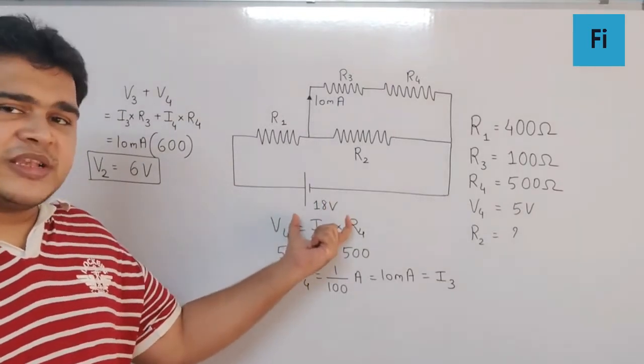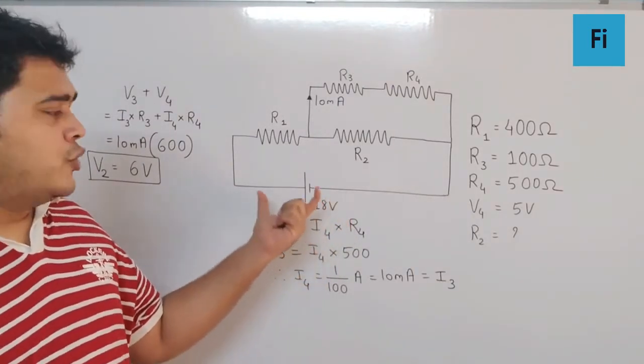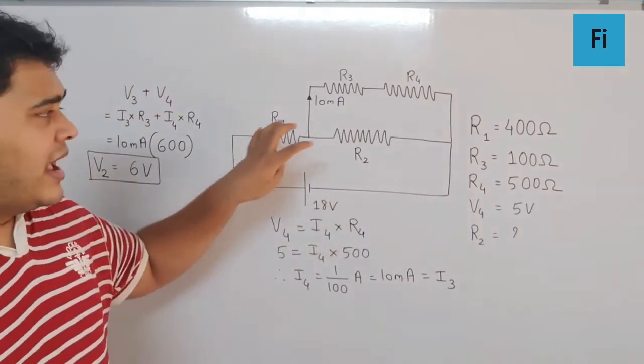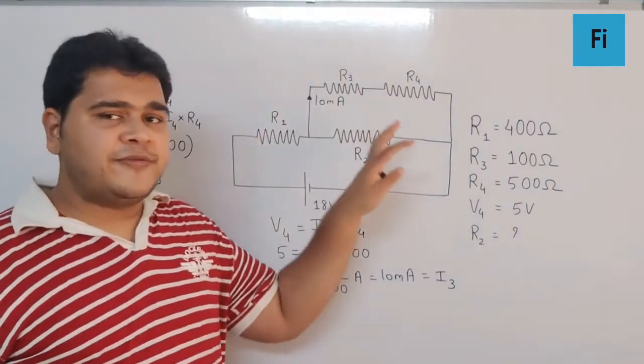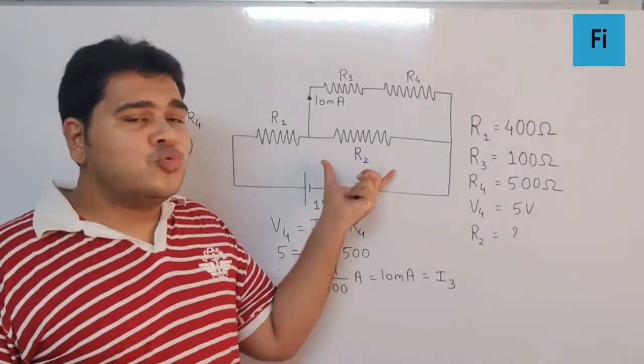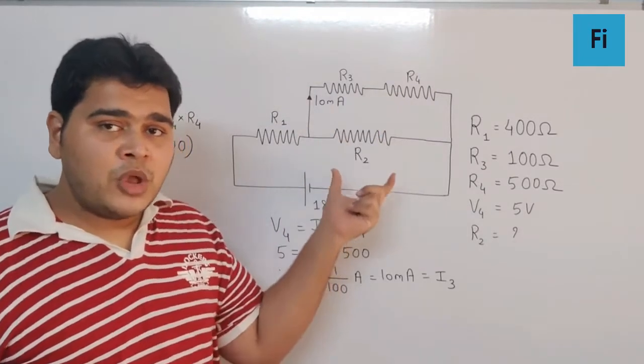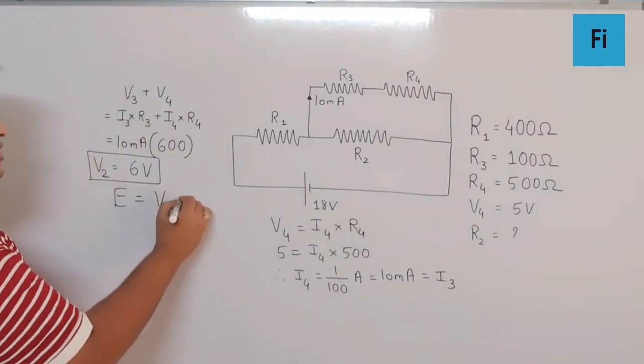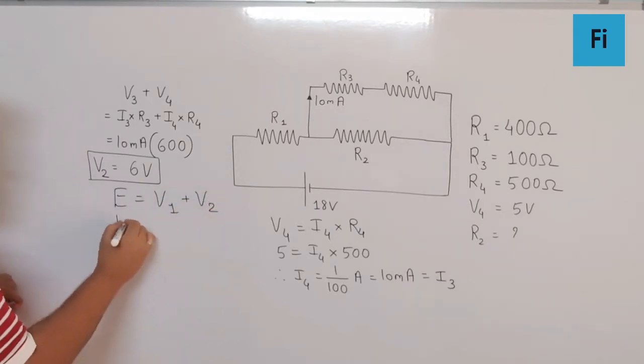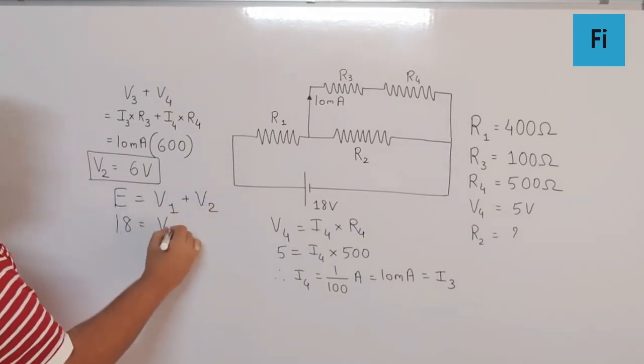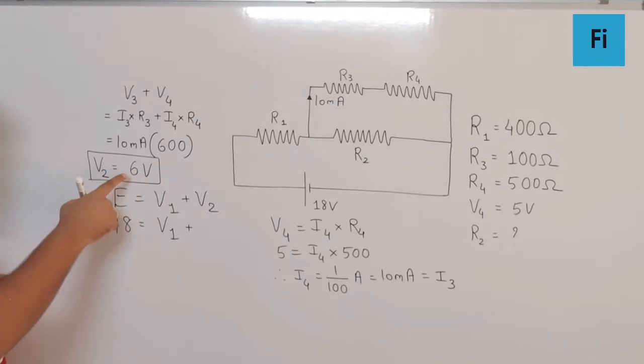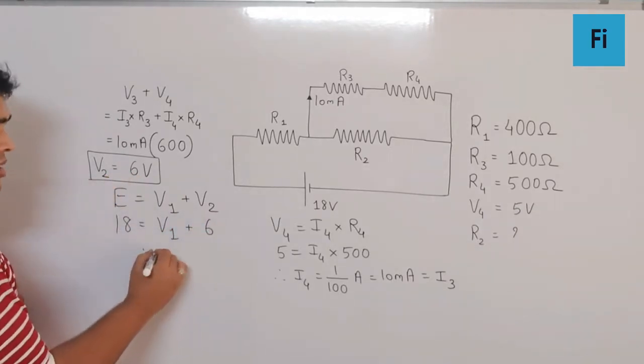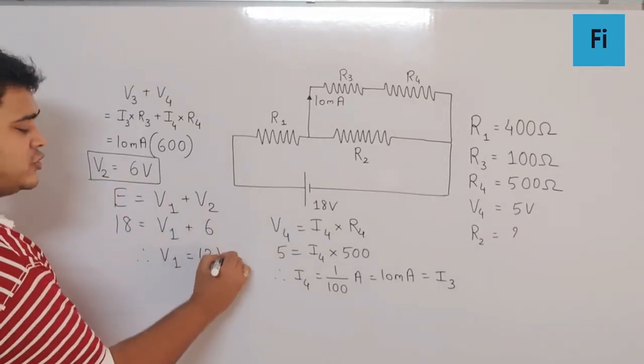Now can I say that total voltage for the circuit is 18 volt, which is divided between R1 and the combination of R2, R3, and R4. So we can say that EMF is actually equal to V1 plus V2. So EMF is 18, V2 we just found as 6, and so V1 will be 12 volt.